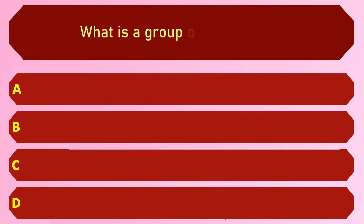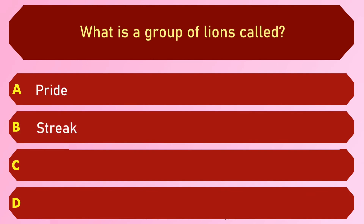What is a group of lions called? Options are: A) Pride, B) Street, C) Sloth, and D) Herd.